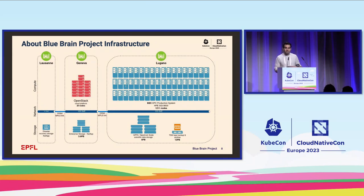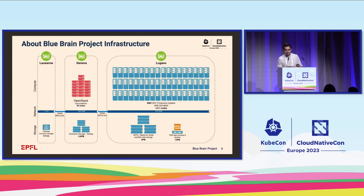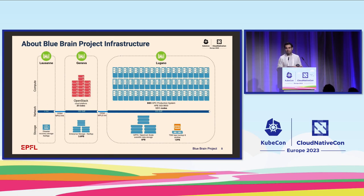I'd like to start my part of the presentation talking about the Blue Brain Project infrastructure. As you can see on the slide, we have three different data centers. The first one in Lugano, where we have our supercomputer, an eight-petabyte Spectrum Scale for scientific data storage, and a TSN system for tape backups. We have another one in Lausanne with our disaster recovery storage based on NetApp, and finally one in Geneva where we have our private cloud based on OpenStack — and this is where we run most of our services from, including Kubernetes.